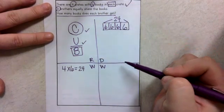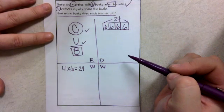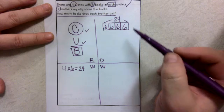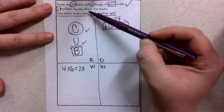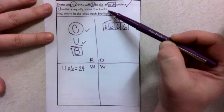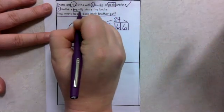A lot of times students want to stop here. There's still more information to gather in our word problem. So let's keep going. Three brothers equally share the books. Are there any math words to box? Yes, equally. I'm going to do equally share.